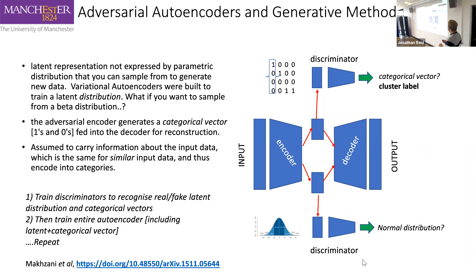Jumping a little further into the detail: latent representation is not always expressed by a parametric distribution, and you can sample from the latent space to generate new data. But what if we wanted to look at different distributions? That's especially relevant for large ambient data sets, and that's where an adversarial autoencoder comes in. The general theory is that it generates a categorical vector for each individual particle — an array where, depending on the positions of zeros and ones, it will categorize each particle before arriving at a cluster label.